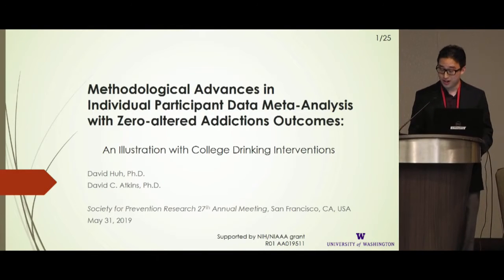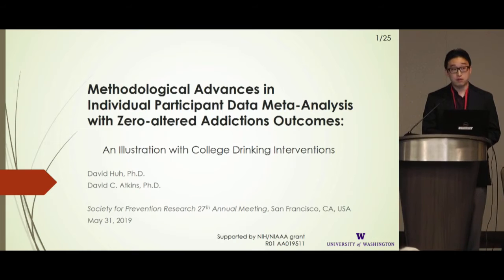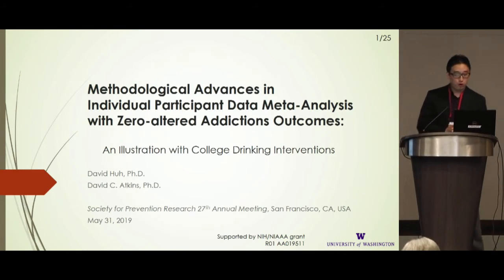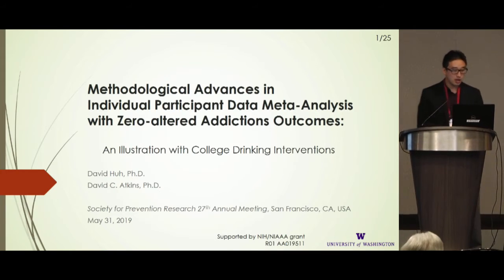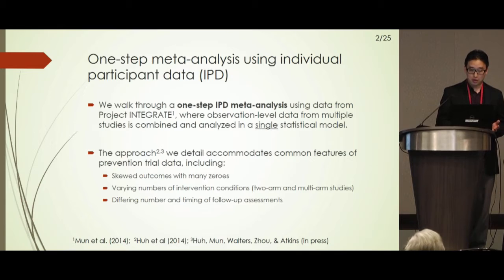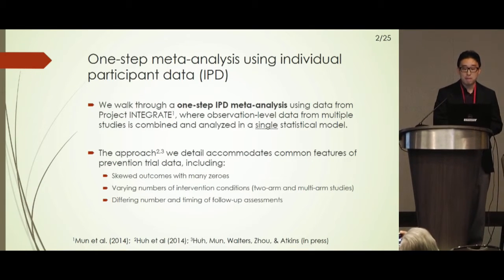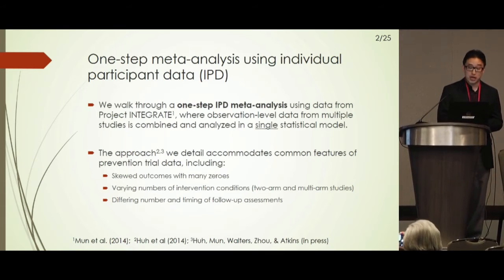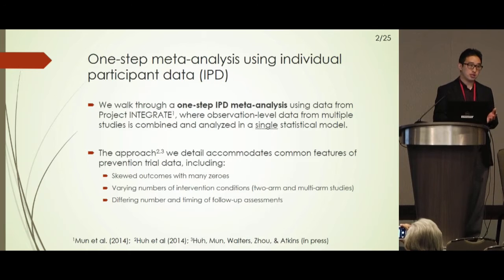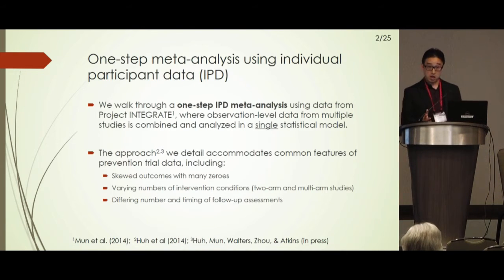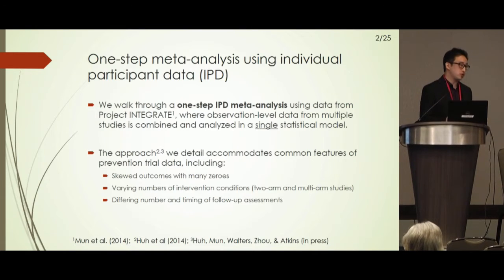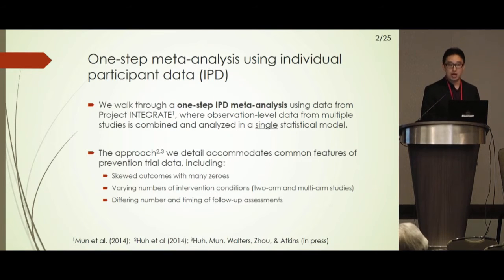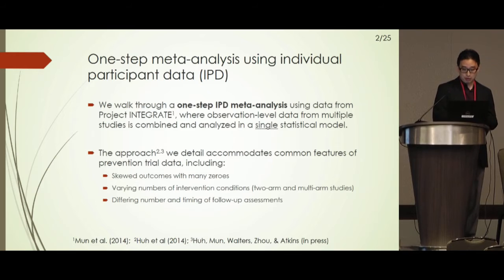Good afternoon everyone, happy Friday. My name is David Hu from the University of Washington School of Social Work. For the third portion of this symposium, I'll be walking all of you through a case example of a one-step meta-analysis using individual level or observation level data. Our talk is very focused on alcohol data, but a lot of the lessons we've learned will generally apply to many types of data you'll encounter in prevention research. The approach I will be describing accommodates features you'll often see in trial data.